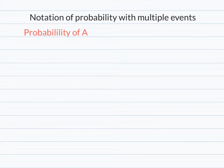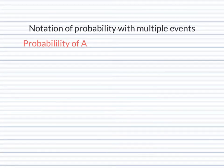Let's look at some notation of probability where we have multiple events. So the first thing that we're going to look at is the probability of A, which we've already seen. We would say that that is P of A. The next one is the probability of B, which would just be written the same way, the probability of event B.